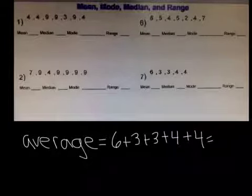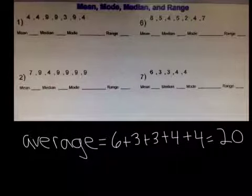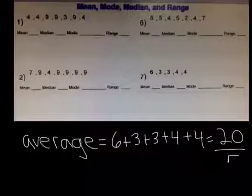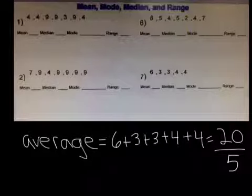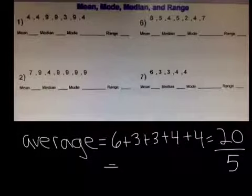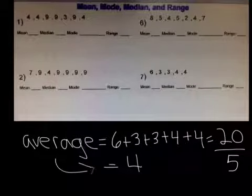So, 6 plus 3 plus 3 plus 4 plus 4 equals 20. And now we have to divide 20 divided by 5 because we have 5 numbers. 20 divided by 5 equals 4.